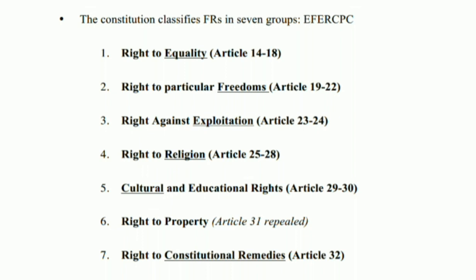The second right is the Right to Freedom, which comes under Articles 19 to 22. The third is Right against Exploitation, explained in Articles 23 and 24. The fourth is Right to Religion, covered under Articles 25 to 28. The fifth is Cultural and Educational Rights, which is Article 29 and 30.